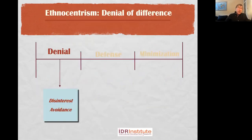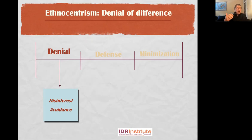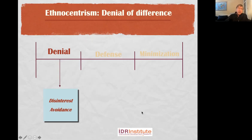Now I will go through each of these stages and give you more information, specifically helping you identify what people tend to say and the assumptions they make when operating at that stage, and then some of the things you could do — or not do — that would help people from this stage develop into the next. This would apply to yourself as well as to people you may be teaching or facilitating.